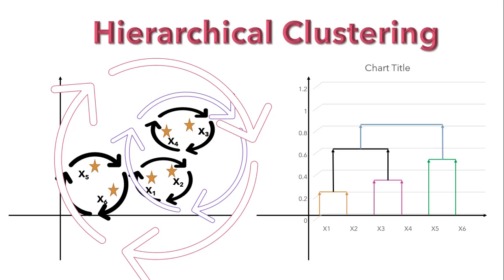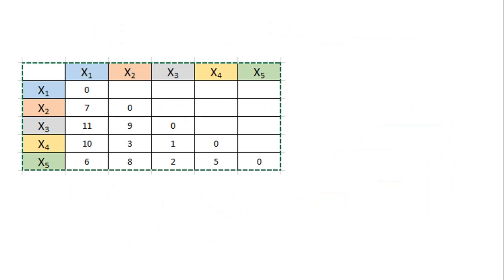Now here we will find the longest vertical line such that none of the horizontal lines are passing through it. So we can conclude that we have two clusters by making use of these mentioned points. This is the main objective of creating hierarchical clustering. Now you must have one question: how can we create a dendrogram or calculate the distance among different points? Let's quickly understand this with a real life example.